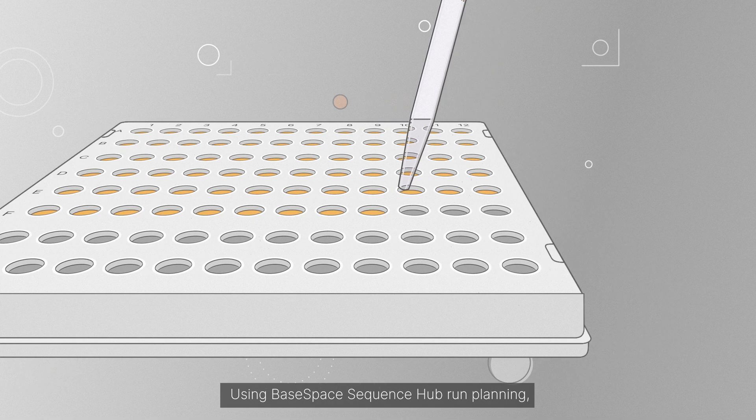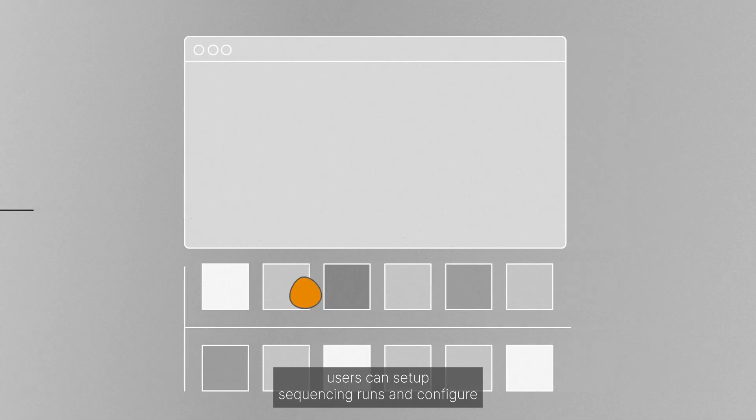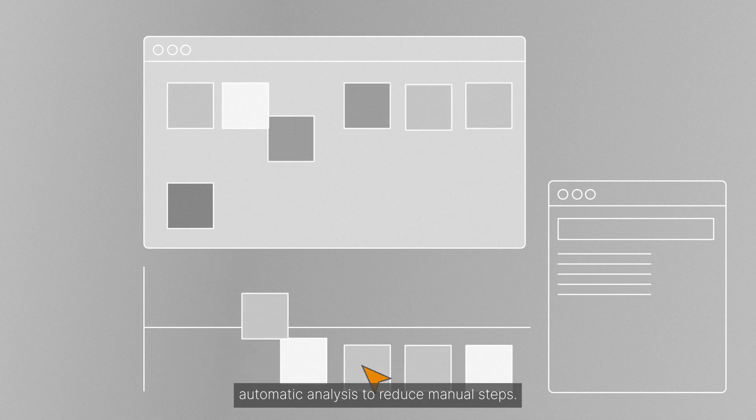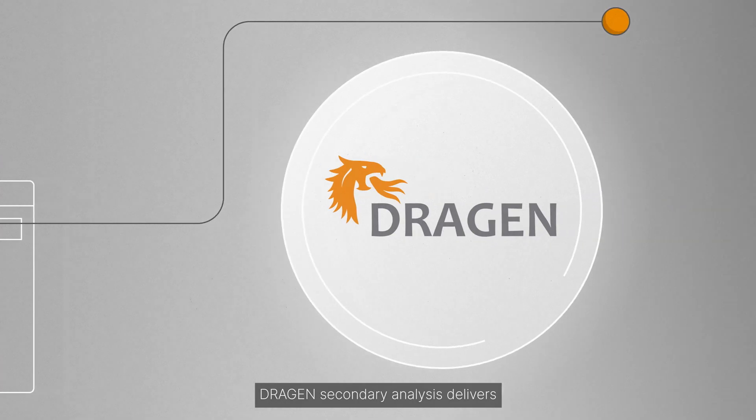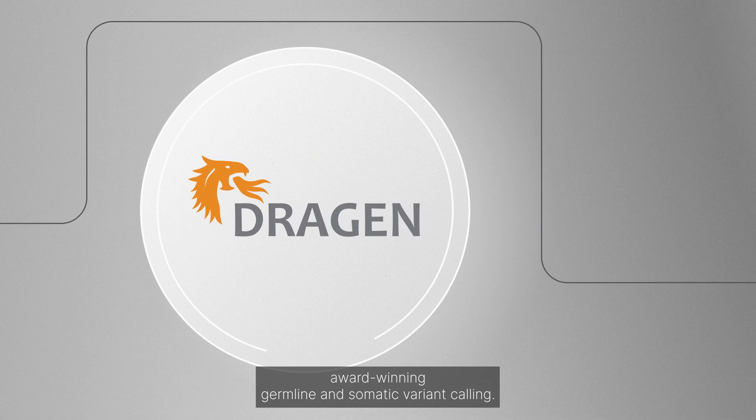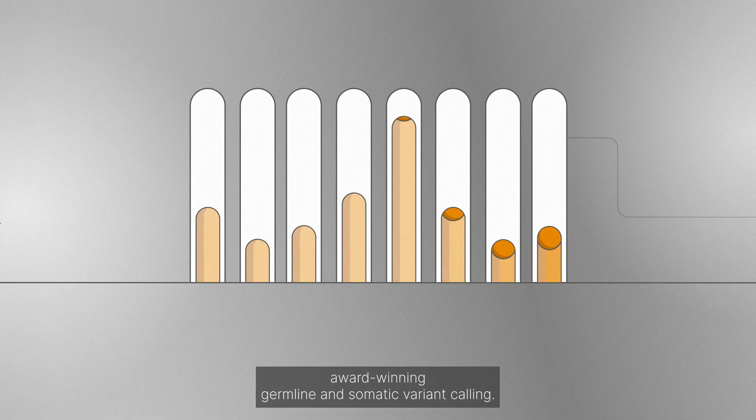Using BaseSpace Sequence Hub run planning, users can set up sequencing runs and configure automatic analysis to reduce manual steps. DRAGON Secondary Analysis delivers award-winning germline and somatic variant calling.